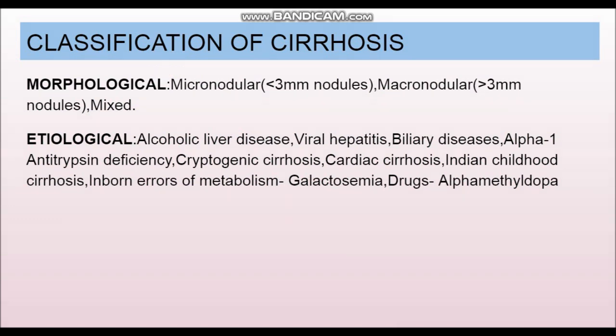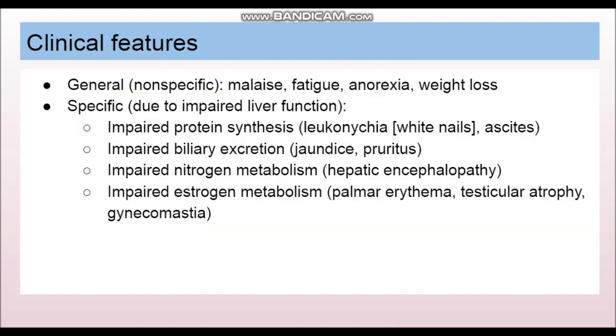Going to the clinical features: patients commonly complain of malaise, fatigue, anorexia, and weight loss. Due to loss of liver function, patients can have ascites because of low protein in the serum, as the liver is involved in protein synthesis. Impaired biliary secretion can lead to jaundice, impaired nitrogen metabolism can lead to hepatic encephalopathy, and impaired estrogen metabolism can lead to gynecomastia and testicular atrophy.